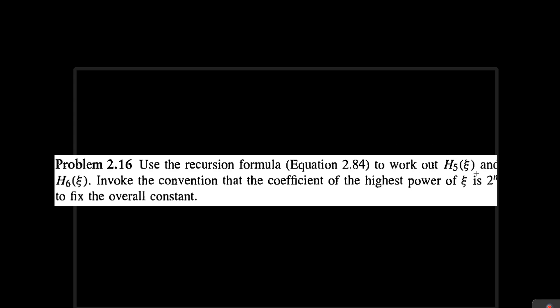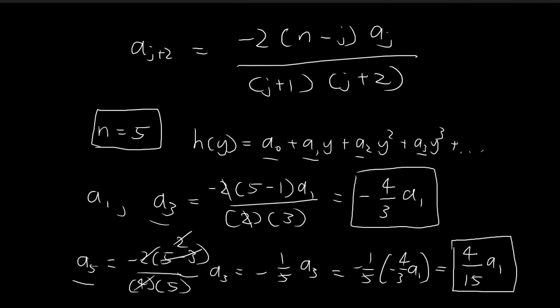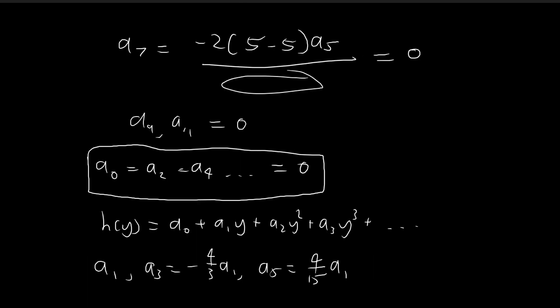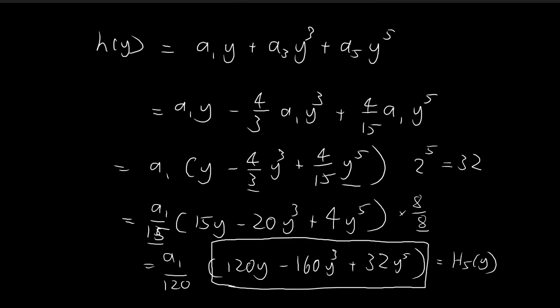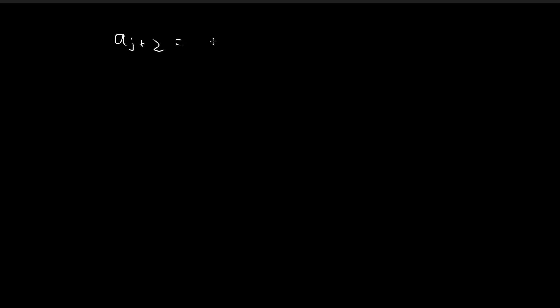In the previous video we found what H of 5 should be, so now we're going to move on to find H of 6. We're going to follow through the same procedure that we did in the previous video. The first thing we're going to do is write down the recursion formula for the relationship between the constants.